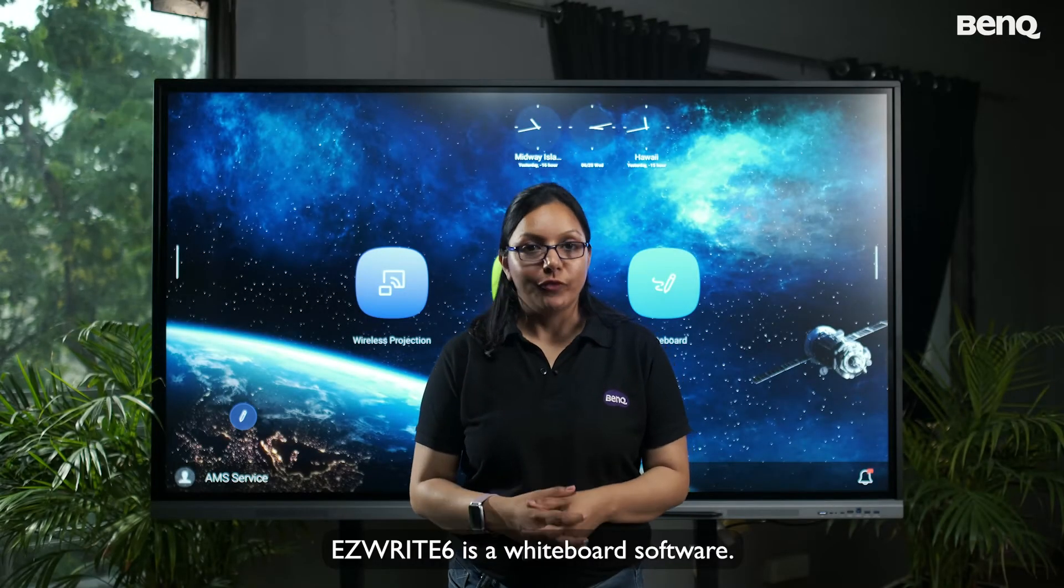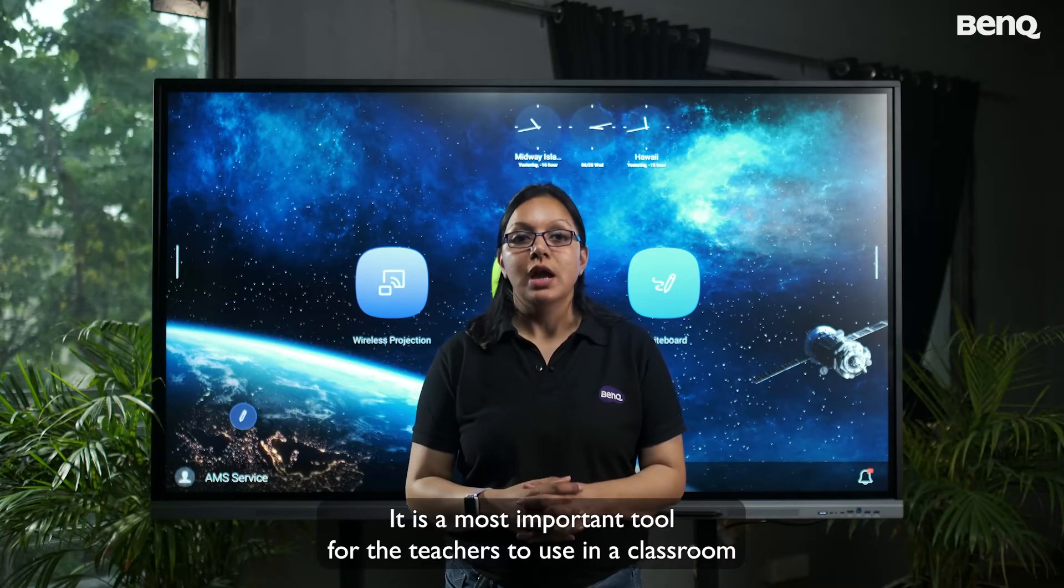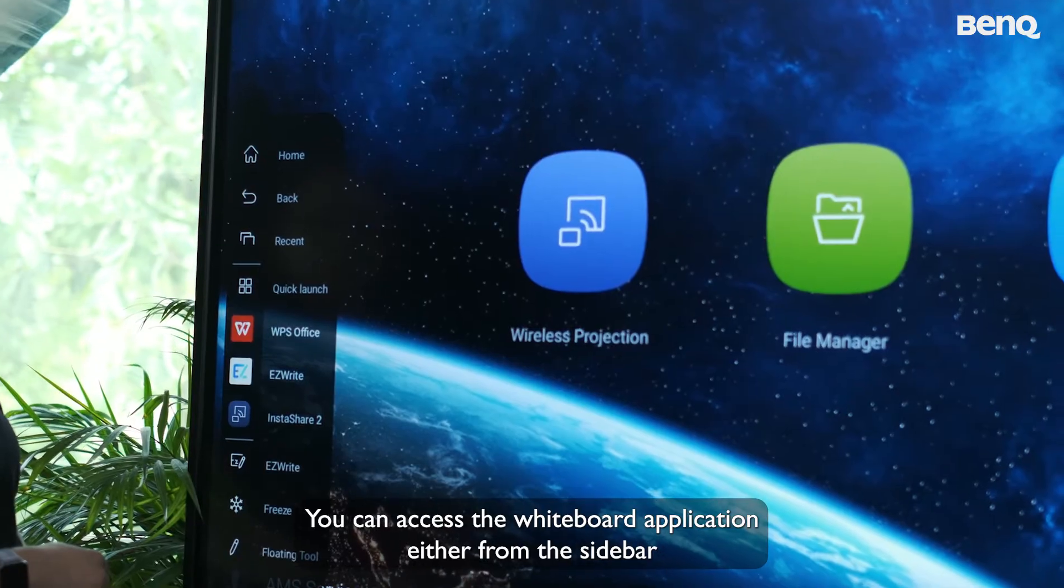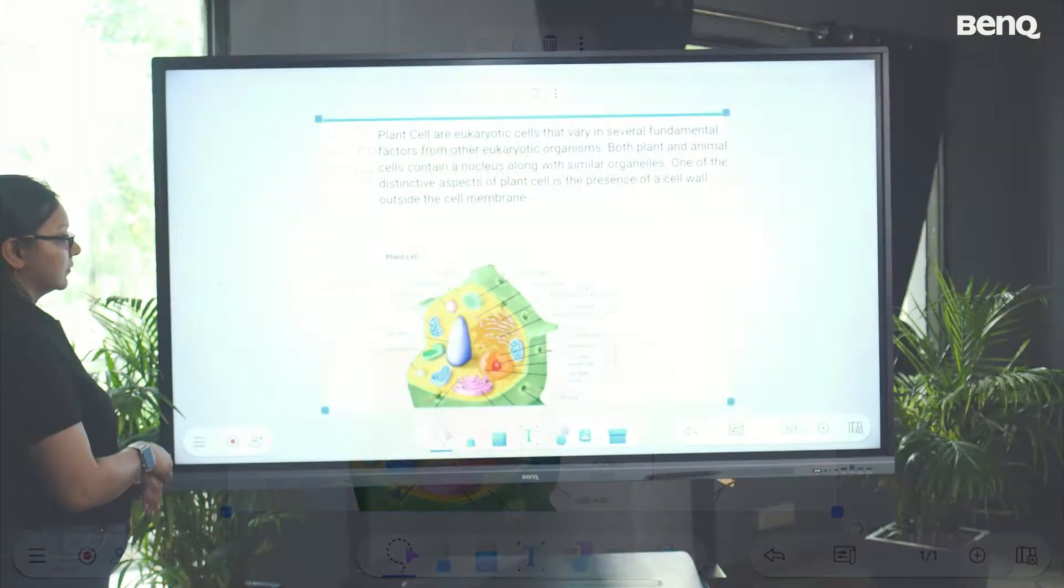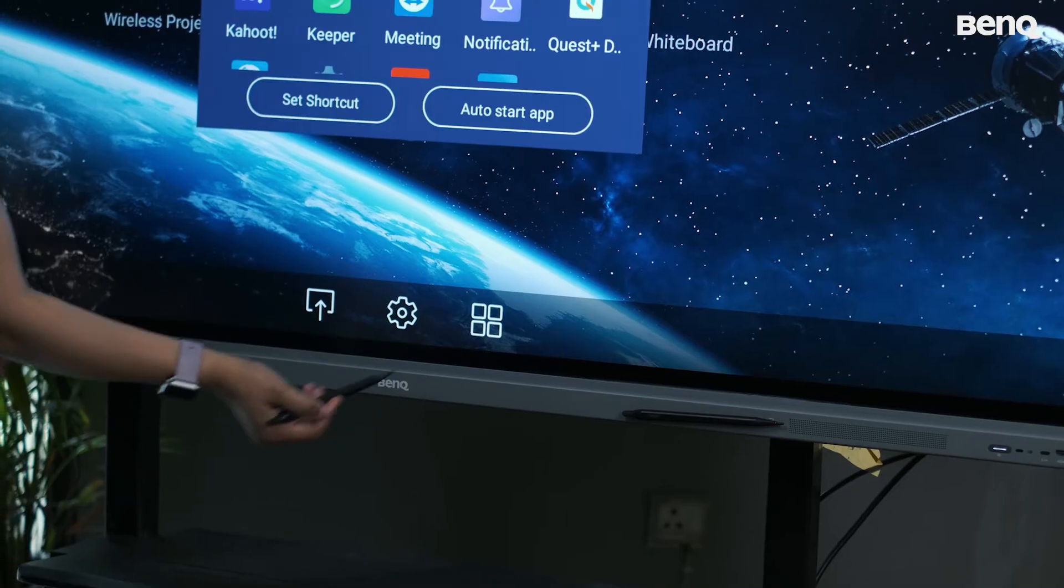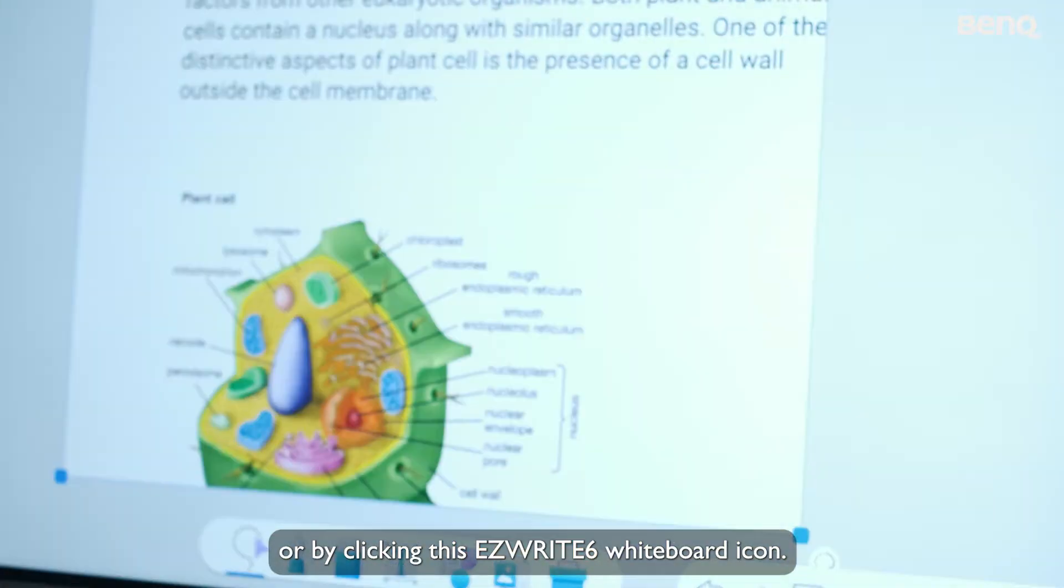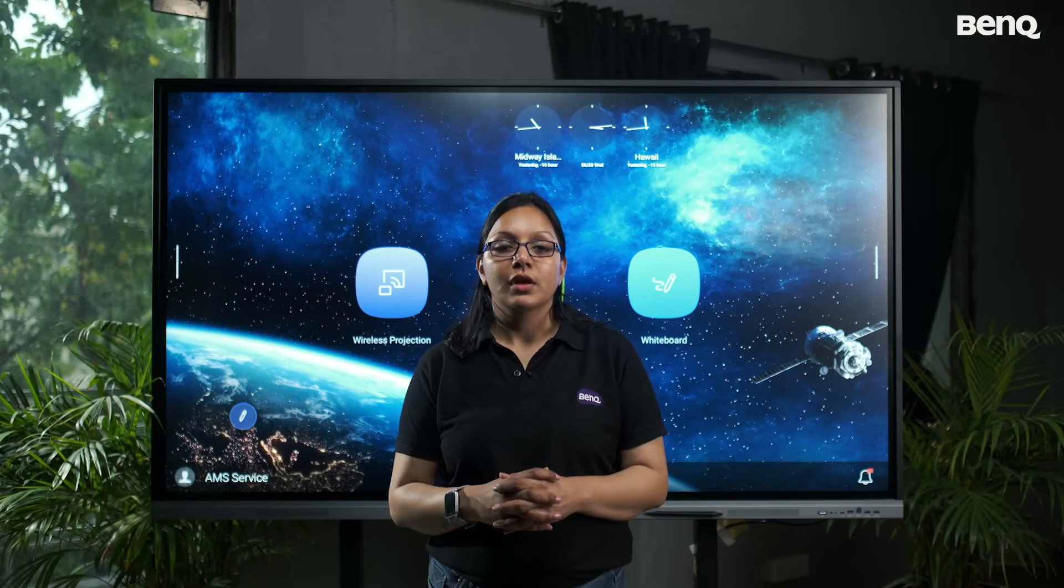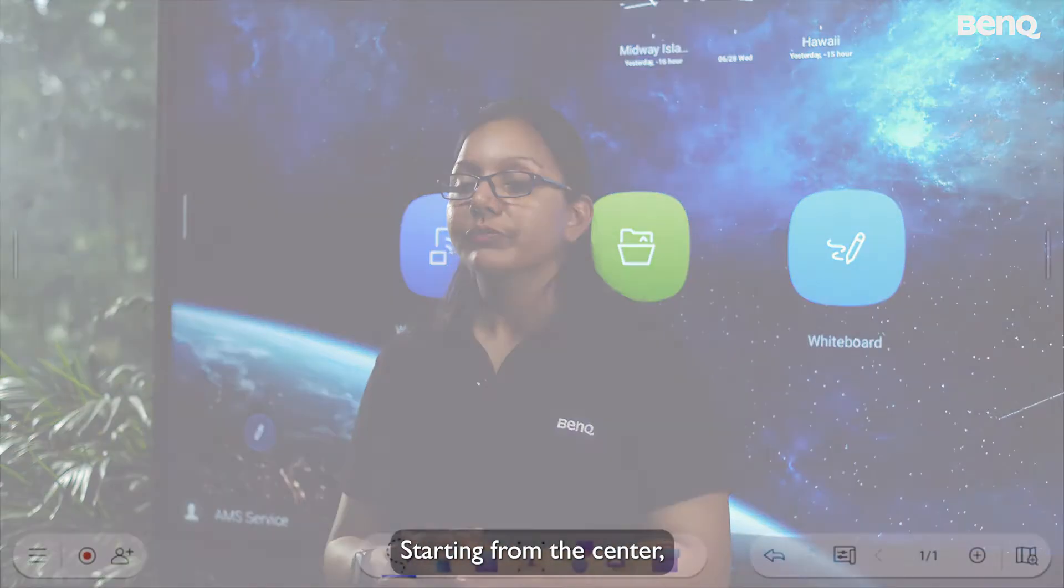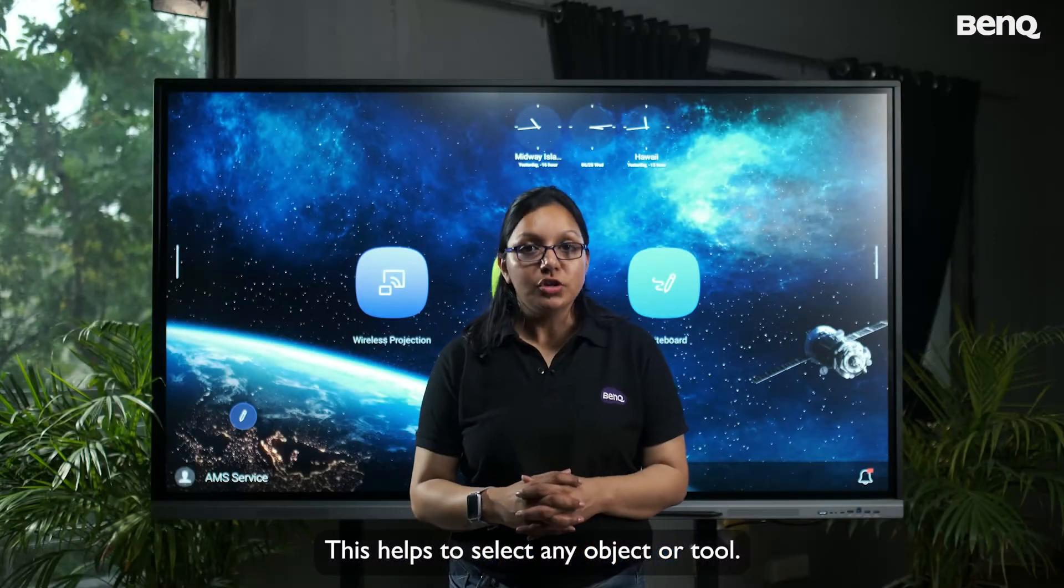EZWrite 6 is a whiteboard software. It is the most important tool for the teachers to use in a classroom and make the session more impactful. You can access the whiteboard application either from the sidebar or from the apps or by clicking this EZWrite 6 whiteboard icon. Now let's see the tools that comes with it. Starting from the center, the first icon is select icon. This helps to select any object or tool.